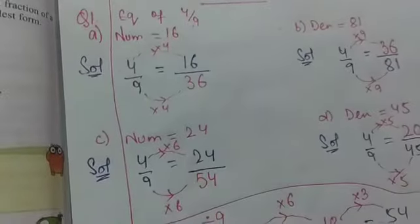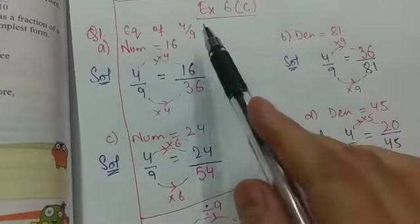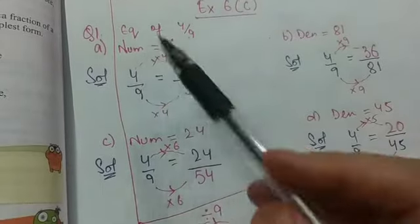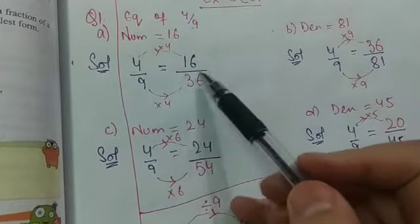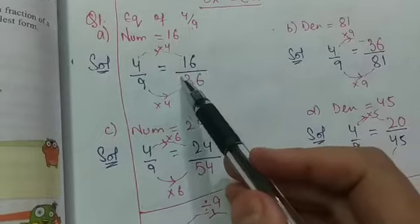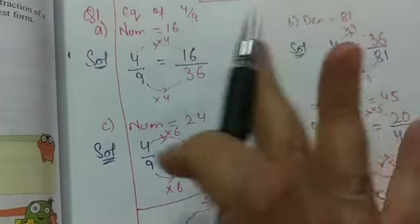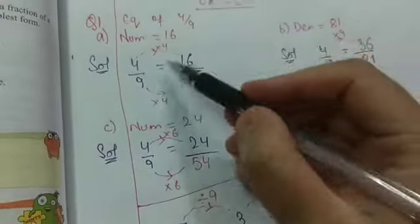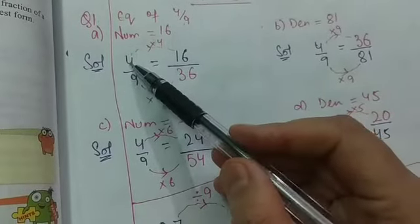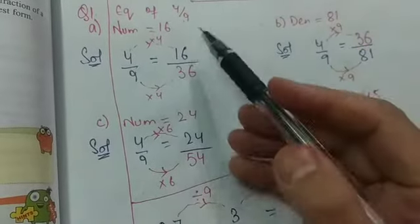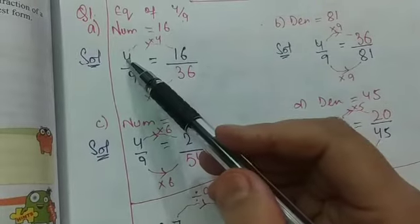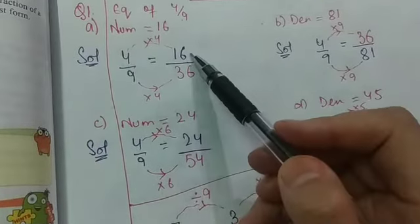So here it is equivalent of 4 by 9 where numerator will be 16. Now I write here 4 by 9 equals to 16 upon. As it is written from red but before you understand that it is blank. So what I have to do? I have to check that I multiply 4 by 4 or divide 16.